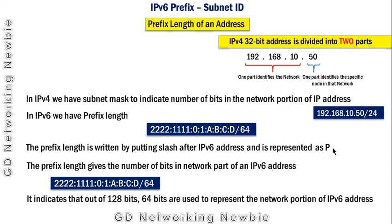For example, in this IPv6 address, 64 indicates that out of 128 bits, 64 bits are used to represent the network portion of the IPv6 address.